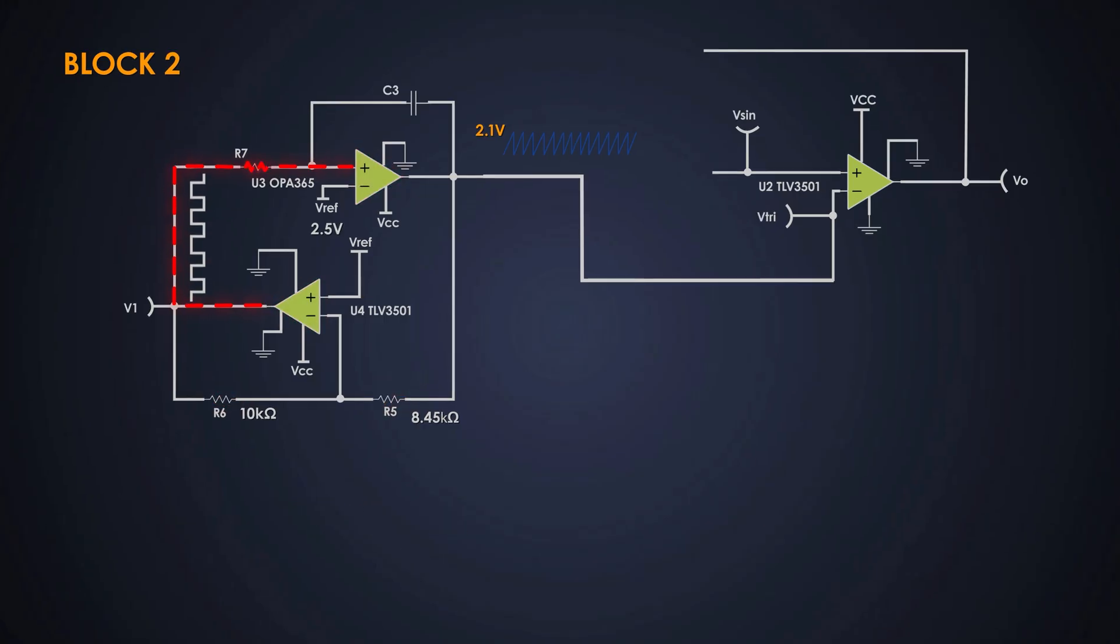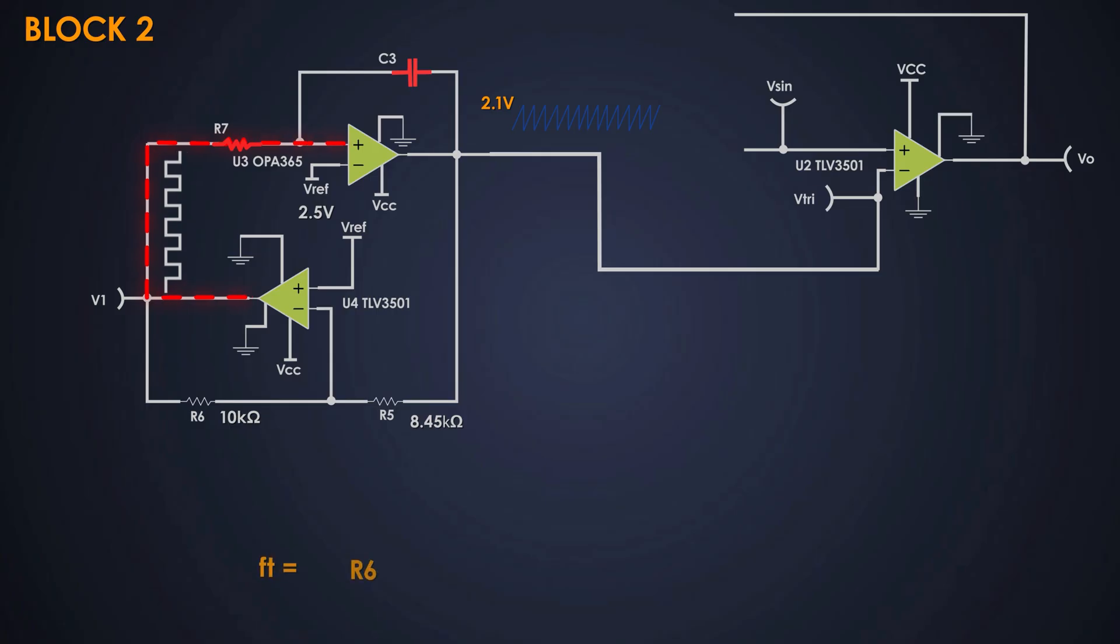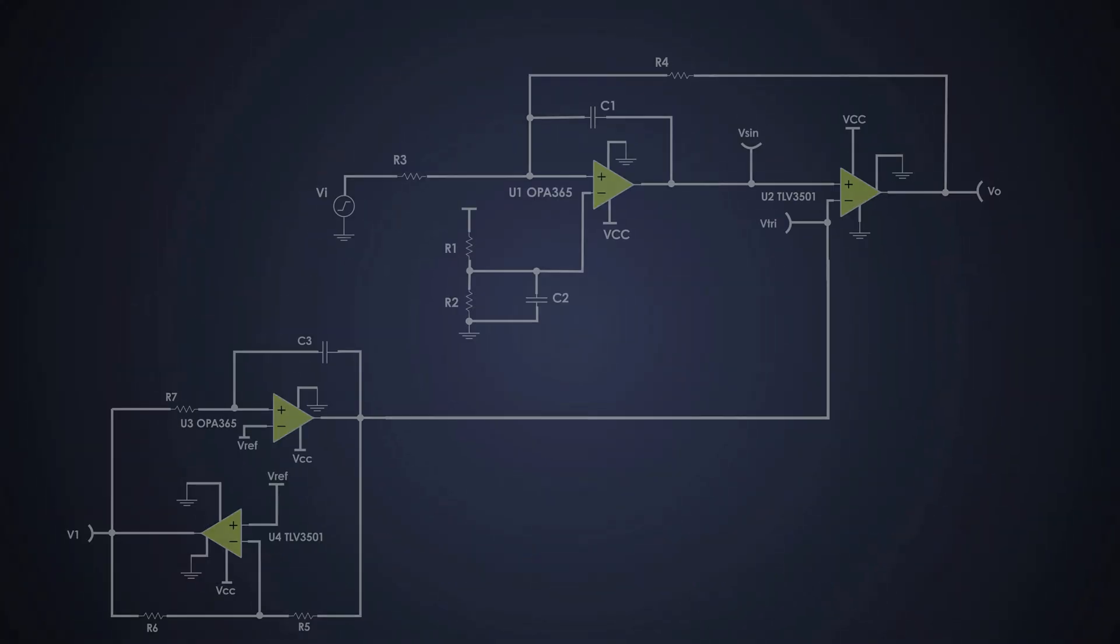For frequency, we adjust R7 and C3 using the triangle wave frequency formula. We rearrange to find R7. Plugging in the values, we get 5.9 kilo ohms as the nearest standard value.